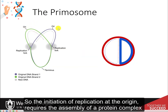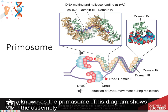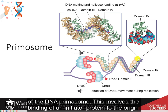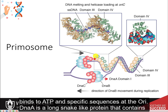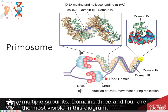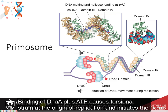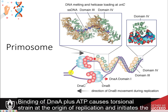The initiation of replication at the origin requires the assembly of a protein complex known as the primosome. This diagram shows the assembly of the DNA primosome. This involves the binding of an initiator protein to the origin sequence. In E. coli, this initiator is encoded for by the DnaA gene. The DnaA initiator protein binds to ATP and specific sequences at the ORI. DnaA is a long, snake-like protein that contains multiple subunits. Domains 3 and 4 are the most visible in this diagram. Binding of DnaA plus ATP causes torsional strain at the origin of replication and initiates the unwinding process.